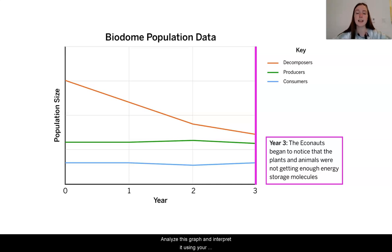Analyze this graph and interpret it using your understanding of where carbon dioxide comes from and how these different populations play a role. I look forward to hearing your analysis about what is occurring in the biodome.